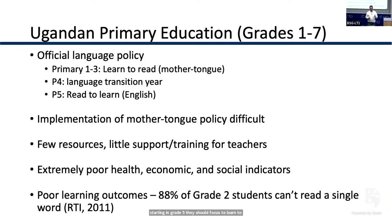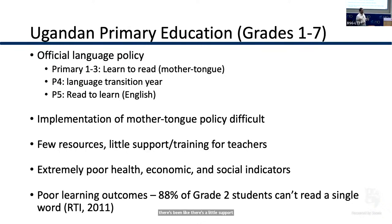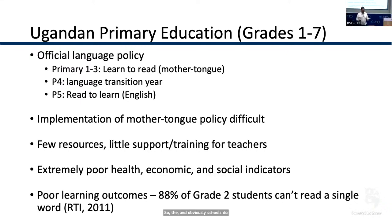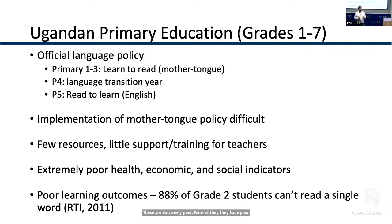Implementation of this policy has been difficult. Not every school is compliant; several start teaching reading directly in English or begin the transition earlier than grade four. Although primary education should be free, many schools request donations, and students whose parents don't pay are sent home — schools do this because they are underfunded. These are extremely poor families with poor health and social indicators, and learning outcomes are correspondingly very poor. By grade two, 88% of children cannot read a single word.